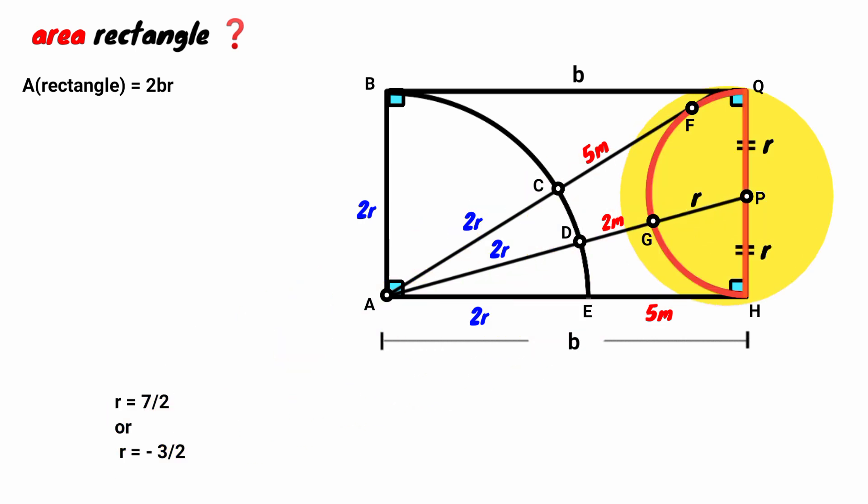R is the radius of this semicircle. It can't be negative. We discard this equation. So R equals 7 over 2 meters.